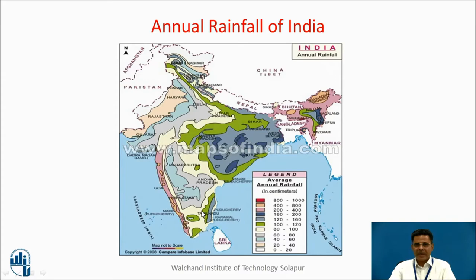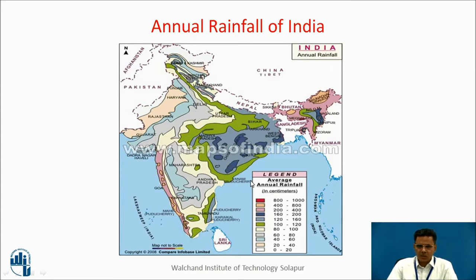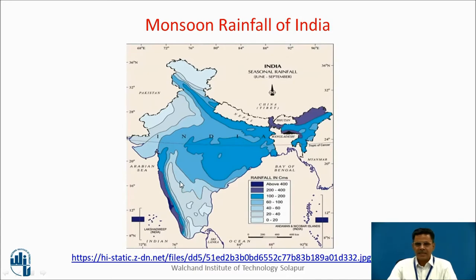We find the variation of annual rainfall over India ranging from about 20 centimetres up to 1000 centimetres. This automatically keeps the distribution of water resources uneven all over the country. This figure shows monsoon rainfall over India — dark colours show greater rainfall and faint colours show lesser rainfall. The Konkan region and eastern states have higher rainfall.